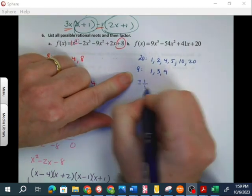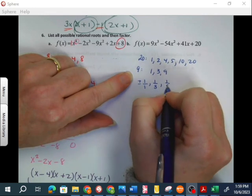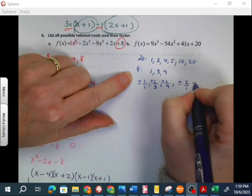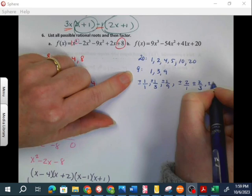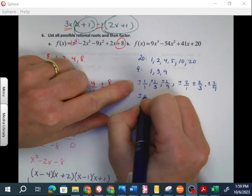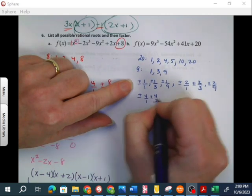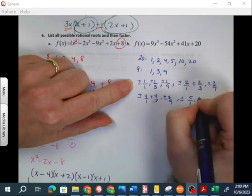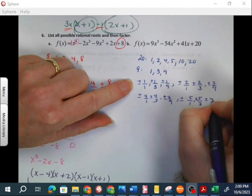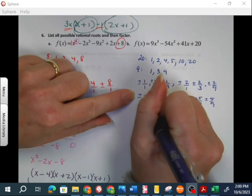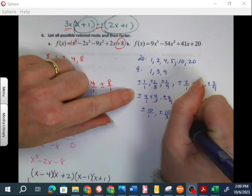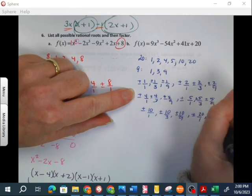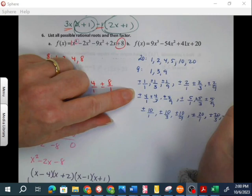Positive and negative 1 over 1, 1 over 3, 1 over 9. And they're always positive and negative. Positive and negative 2 over 1, 2 over 3, and 2 over 9. Positive and negative 4 over 1, 4 over 3, and 4 over 9. Positive and negative 5 over 1, 5 over 3, and 5 over 9. Positive and negative 10 over 1, 10 over 3, 10 over 9. Positive and negative 20 over 1, 20 over 3, and 20 over 9. That's a lot.